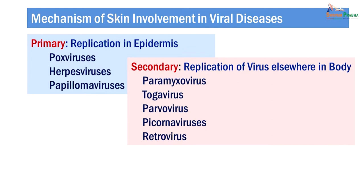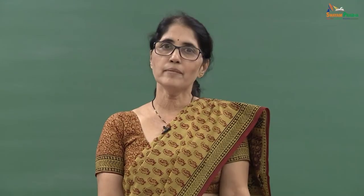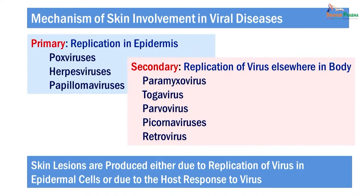A large number of viruses like paramyxoviruses, togaviruses such as measles and rubella virus, parvoviruses, picornaviruses, and retroviruses cause cutaneous manifestations by this secondary mechanism. In viral hemorrhagic fevers, there are also some distinct cutaneous lesions observed, but they are not because of the multiplication of the virus in the epidermal cells, but because of diapedesis in the skin capillaries, which also occurs in internal organs. So, skin lesions are produced either due to replication of virus in the epidermal cell or due to the host response to viral infection.